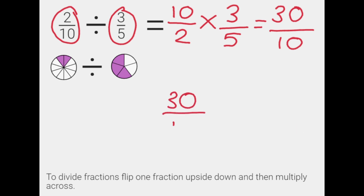And we can simplify this further. How many times does ten go into thirty? It goes in three times, so our answer is three wholes.